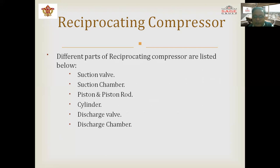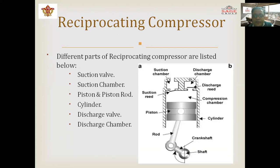The cylinder is the fixed part in which the piston moves. This covers the basic fundamentals of the different parts of the reciprocating air compressor, including the suction chamber and discharge chamber where air moves into and out of the engine cylinder.